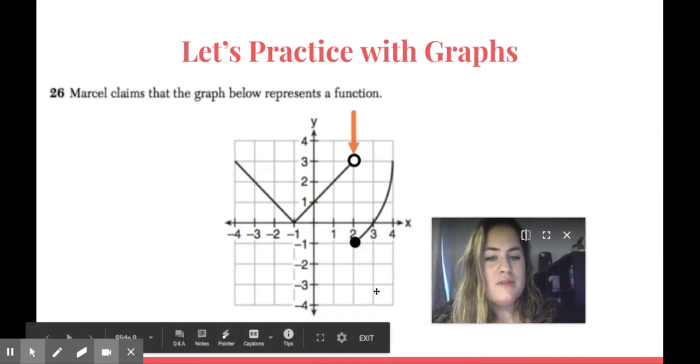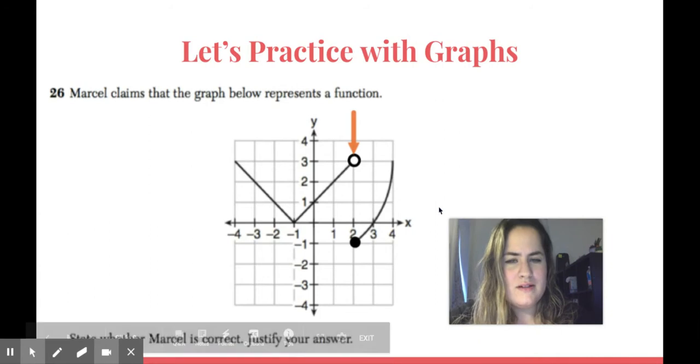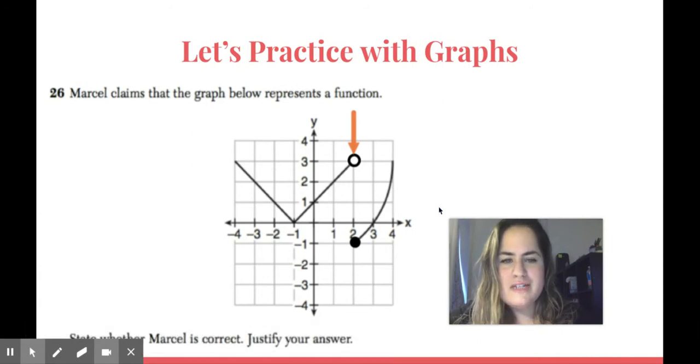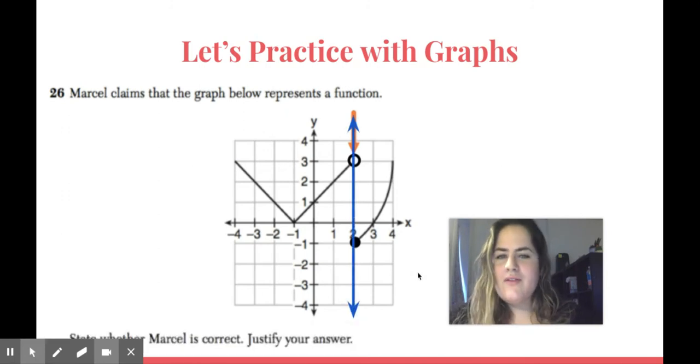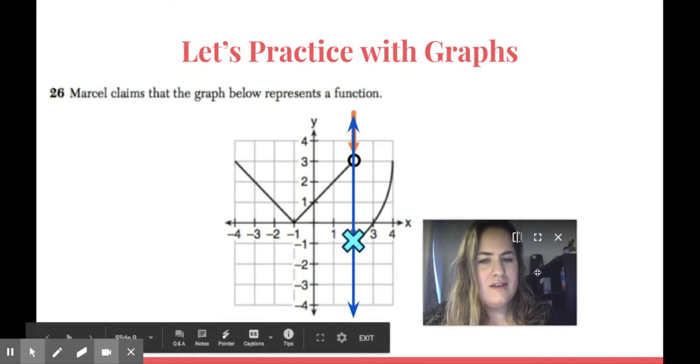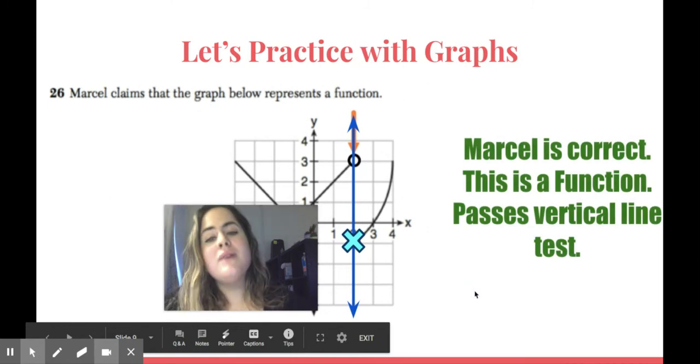This is a similar example except instead of a closed circle up top, I have an open circle. This is called a piecewise function. It's in pieces. It's a graph, so I'm going to do the vertical line test. But an open circle doesn't really count as a point. So it only hits once. If the vertical line test only hits once, it passes. This would be a function.